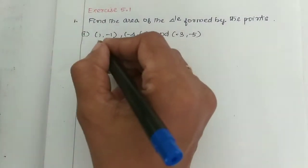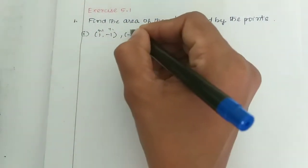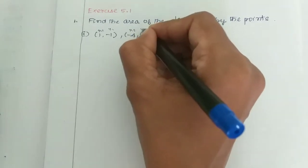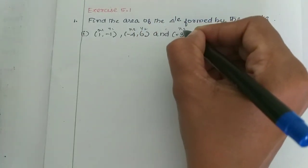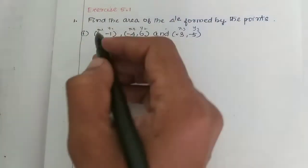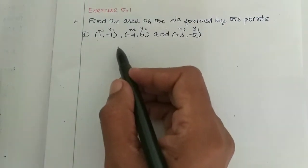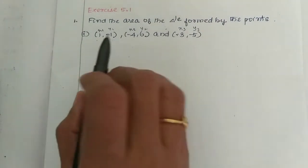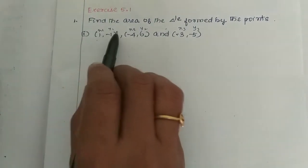This is x1, y1, x2, y2, x3, y3. This is x1, x2 — you can see here. These are ordered pairs.